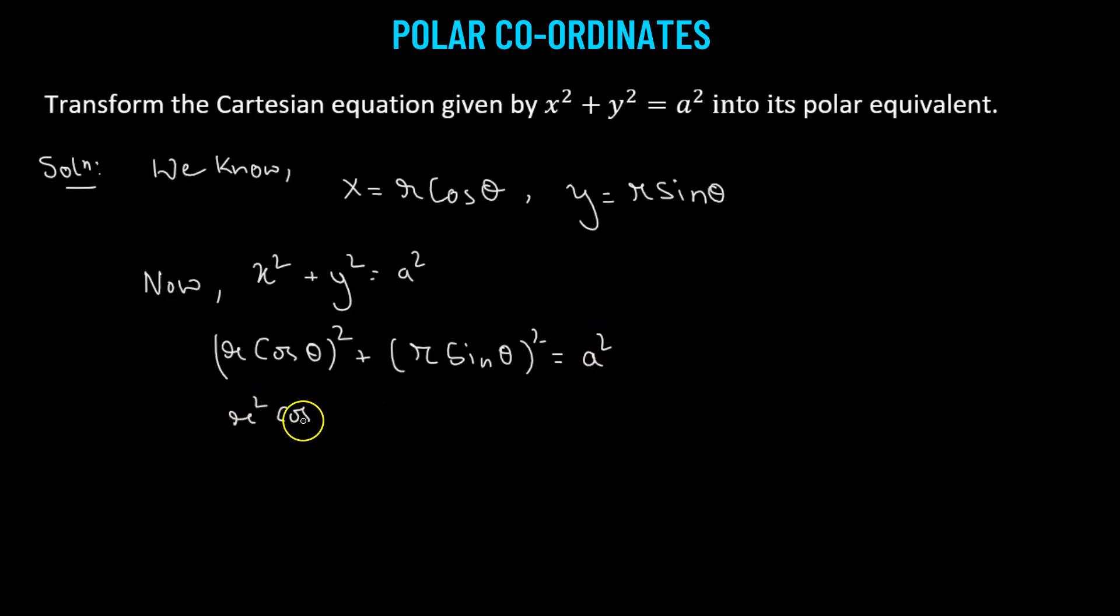We have r squared cosine squared theta plus r squared sine squared theta. That equals a squared.